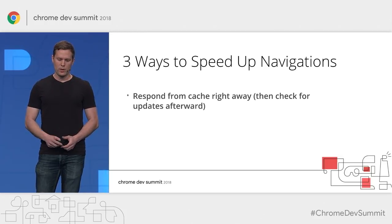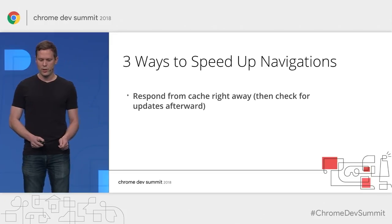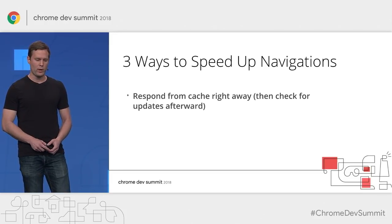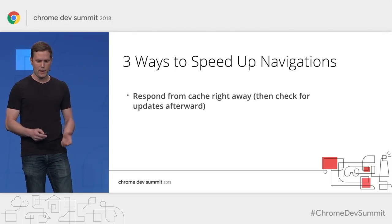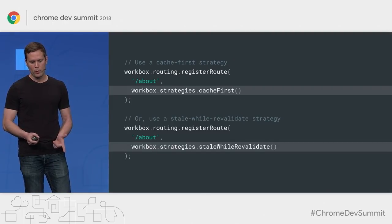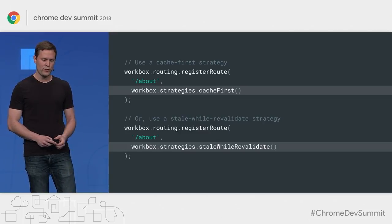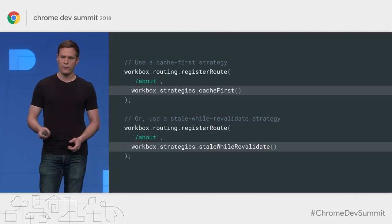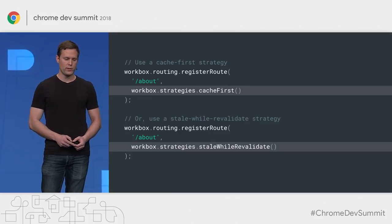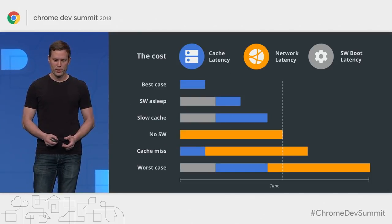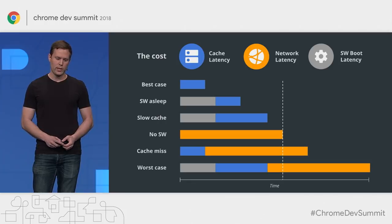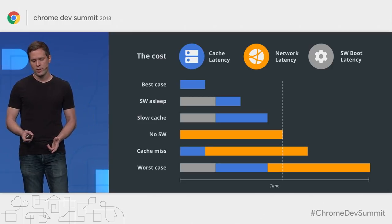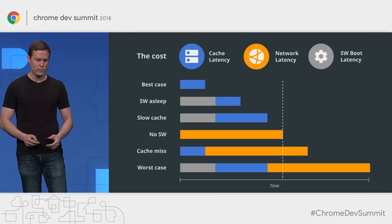So the first tip: respond to navigation requests from the cache. Even if you eventually need to go to the network, you should respond with something right away. A simple way to do this with Workbox is to use a cache-first or stale-while-revalidate strategy. Stale-while-revalidate is preferable because it gives you an opportunity to check for updates in the background and notify the user if there's new content. Responding from cache is generally faster than not using a service worker, even in cases where the service worker is asleep and needs to start up, or where the cache is slow.